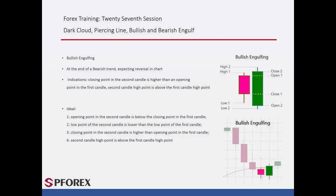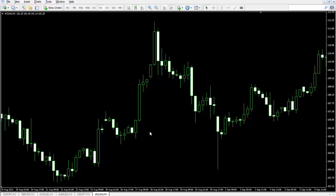Bullish Engulfing pattern indicates a reversal point on a downward direction and includes two candles. Its conditions include: 5) high price of the second candle is above the high of the first candle; 6) close price of the second candle must be higher than the close price of the first candle. The ideal conditions for this pattern are: 1) open price of the second candle is lower than close price of the first candle; 2) high price of the second candle is above high of the first candle; 3) close price of the second candle is higher than open price of the first candle; 4) low price of the second candle is lower than the low of the first candle.